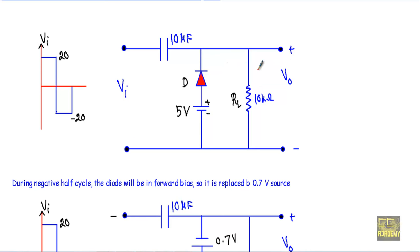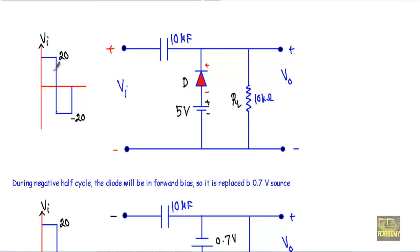We will start our analysis with the half cycle that drives the diode into forward bias. During the positive half cycle, this terminal will be positive and this terminal will be negative. The positive terminal of the input voltage is connected with the N side of the diode and the negative terminal is connected with the P side of the diode, which indicates that the positive cycle will put the diode in reverse bias.